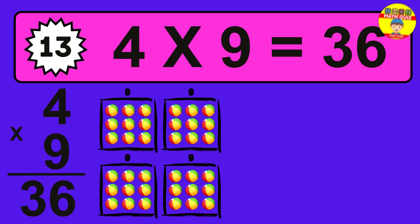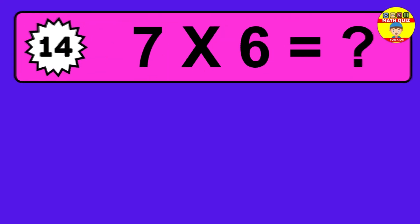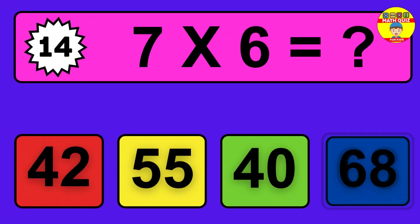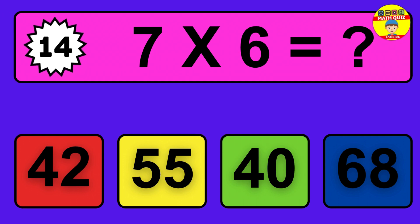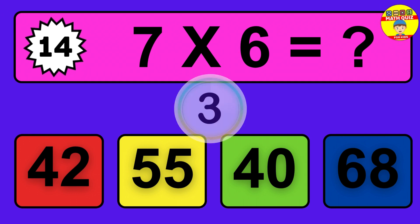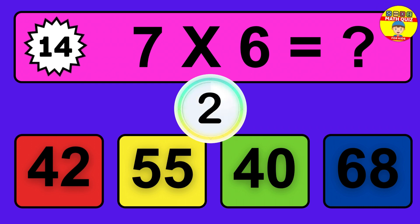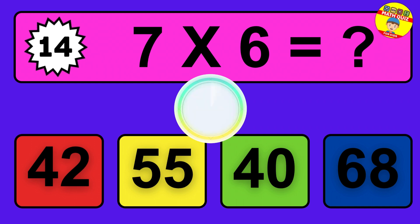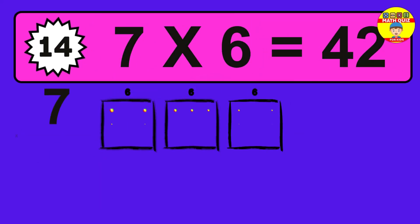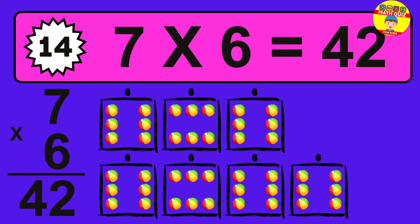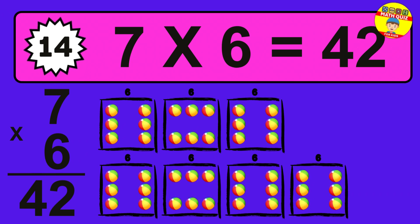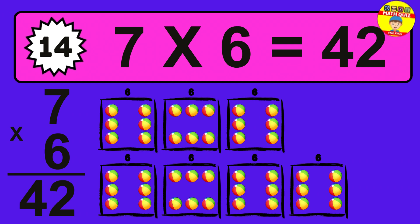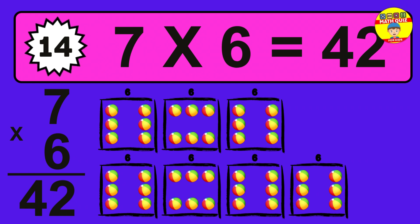Question 14. 7 times 6 equals what? The answer is 7 times 6 is 42. To calculate, we have 7 groups with 6 balls each one. So how many balls do we have? 42 balls.